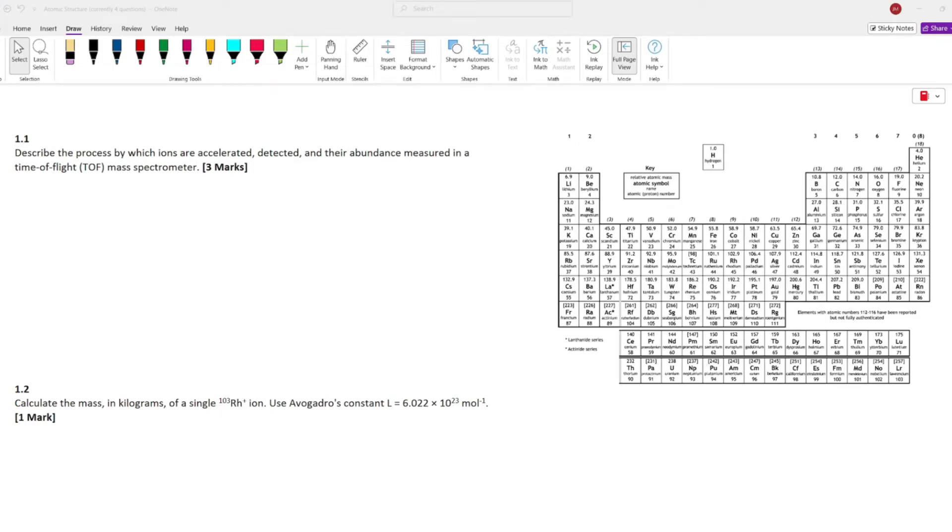All right guys, so this video is going to be a breakdown of a few atomic structure questions. This is for the AQA A-level chemistry specification, a mixture of questions. You've got some theory, some calculations. I'm going to show you my thought process and how I break these down in the exam. Atomic structure is one of the high yield topics for AQA, so I'd be trying to get all marks where possible in all of these questions.